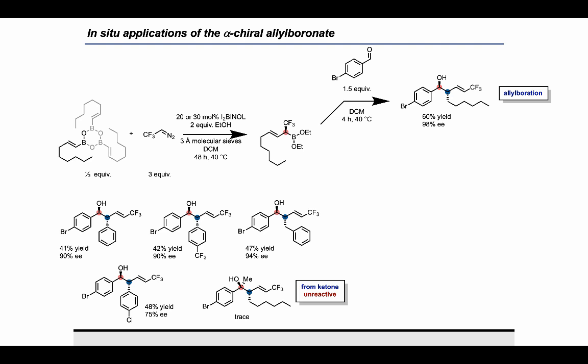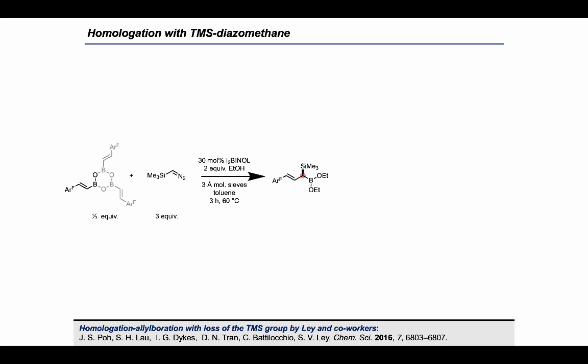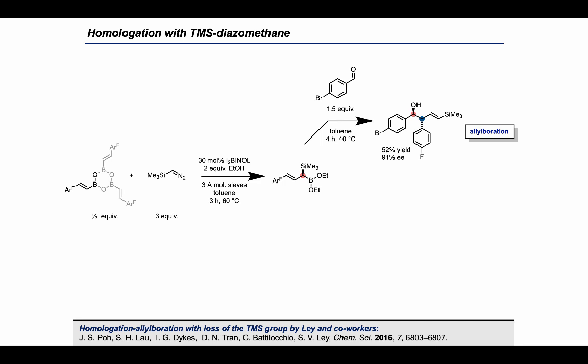Furthermore, we were also able to directly oxidize the alloboronate with sodium peroxide, affording this alpha-chiral allylic alcohol. We carried out the same procedure to obtain these allylic alcohols. Using modified conditions — higher temperature and shorter reaction time — we were also able to extend the scope of the enantioselective homologation to the commercially available TMS diazo compound. We could do the in-situ alloboration workup with 4-bromobenzaldehyde to obtain this homoallylic alcohol. This alloboration is complementary to a method by the group of Ley using TMS diazomethane in a flow reactor, since we retain the TMS group.